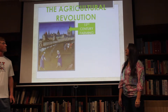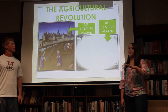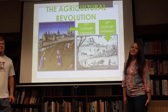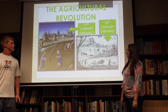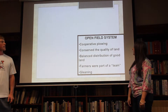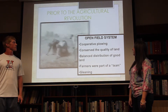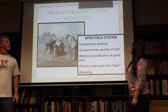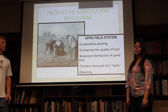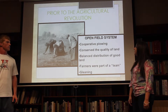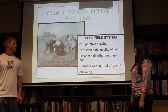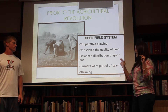The agricultural revolution started somewhere around the 15th century, but that was when farming was really simple. In the 18th century, farming started to change. Prior to the revolution, there was an open field system — this was crop cooperative plowing. This conserved the quality of land and ensured a balanced distribution of good land. Farmers were part of a team.